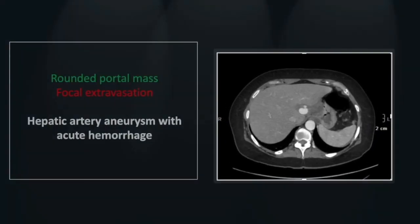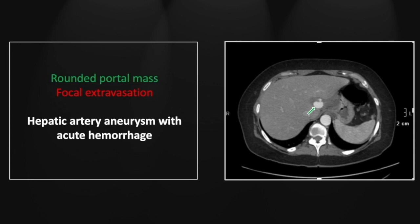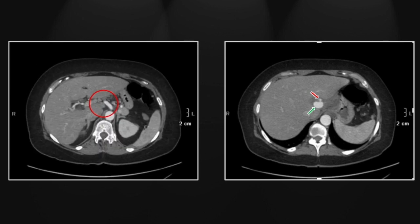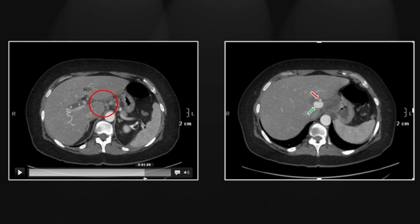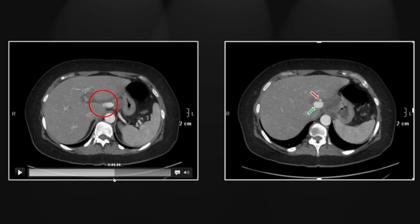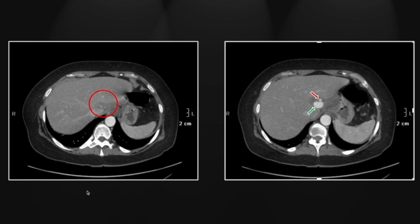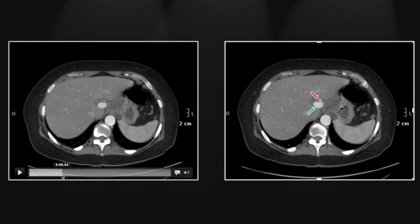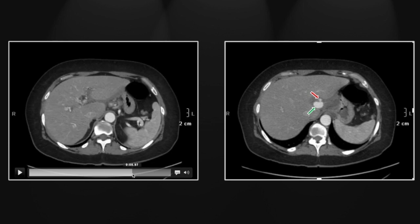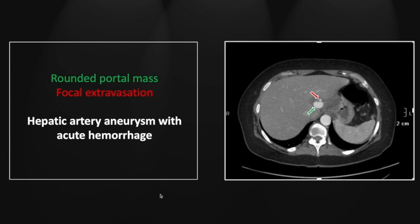Our next case is a hepatic artery aneurysm with acute hemorrhage. You can see the aneurysm here — this is a common location high in the portal region — and a small focus of extravasation. There is fluid density all throughout the portal region related to that active hemorrhage. You can see the aneurysm of the hepatic artery beginning off the celiac as an elongated aneurysm, with a small focus of extravasation coming directly off it, consistent with aneurysm rupture. So that's a hepatic artery aneurysm with acute rupture, extravasation, and hemorrhage.